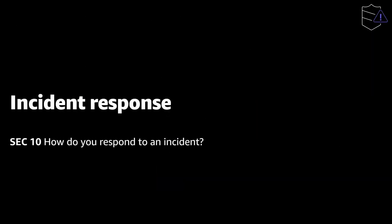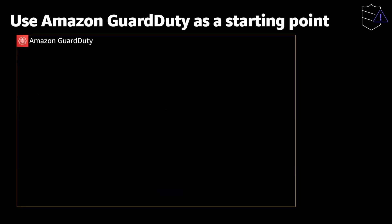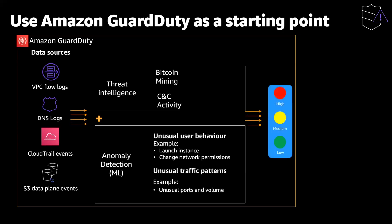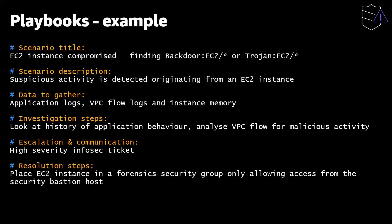Let's move on to incident response. One still needs to put in place processes to respond to and mitigate the potential impact of security incidents. Whenever a detective control is implemented, a corresponding response should be formulated at the same time. As part of implementing detective controls, we turn on Amazon GuardDuty. GuardDuty takes in data from VPC flow logs, DNS logs, CloudTrail events, and S3 data events, and uses threat intelligence to create heuristic alerts — such as detecting Bitcoin mining within the infrastructure — as well as alerts based on anomalies detected by machine learning. Using the list of available detections and creating a playbook to respond to each is a great starting point to build the team's incident response capability.